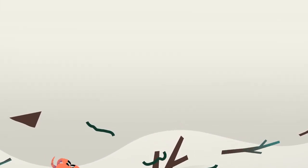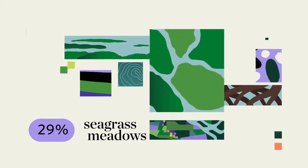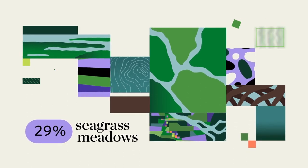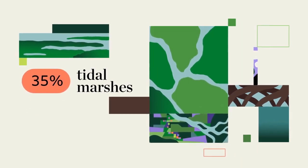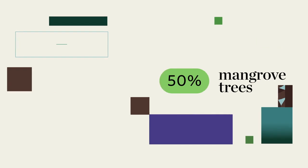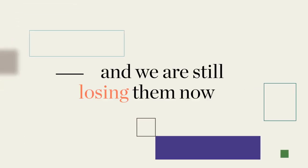But these mighty defenders need our help. All around the world, we've lost up to 29% of seagrass meadows, 35% of tidal marshes, and 50% of mangroves. And we are still losing them now.